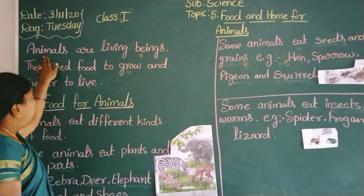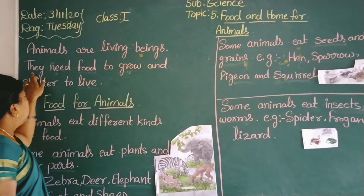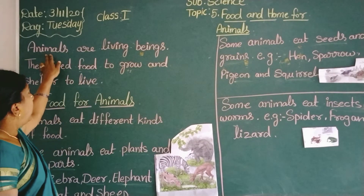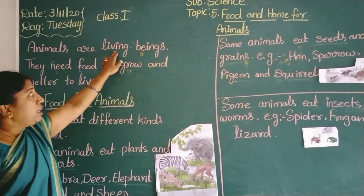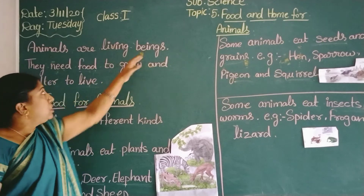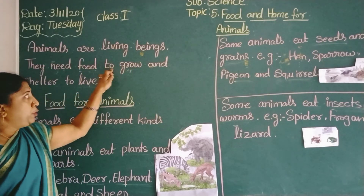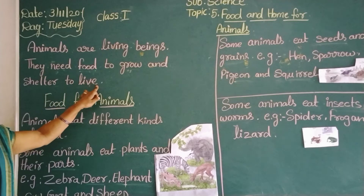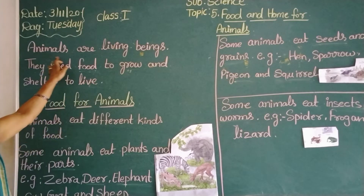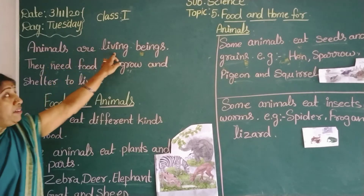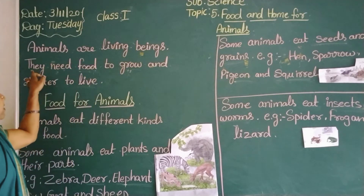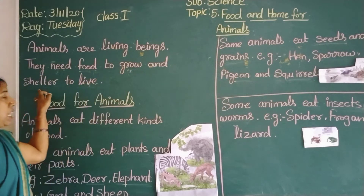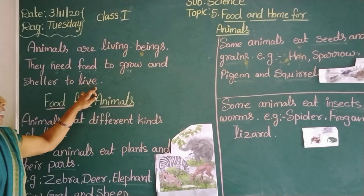Animals are living beings. They need food to grow and shelter to live.